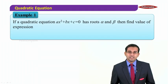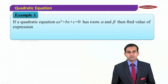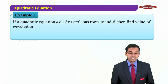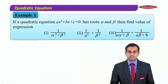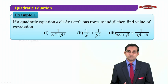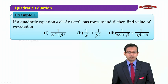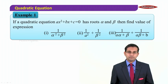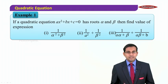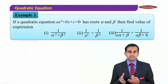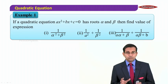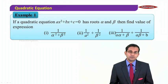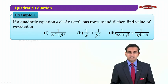In this example, we have a quadratic ax² + bx + c = 0, which has roots alpha and beta. We have to find the values of the given symmetric expressions. There are three problems: first, find the value of 1/(α² + β²); second, 1/α² + 1/β²; and third, 1/(aα + b) + 1/(aβ + b). All three of these expressions are symmetric.